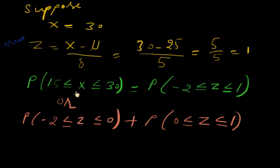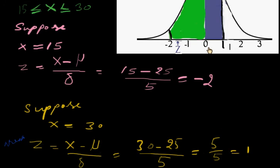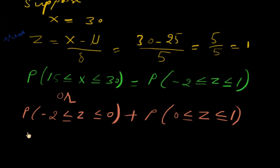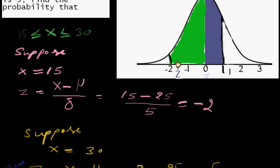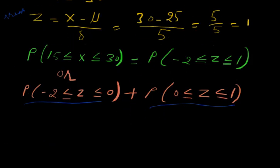Now probability of X between 15 and 30 will equal the probability of Z between negative 2 and 1. We can calculate the probability of these two areas. First we calculate this area, then we calculate this area, and when we add both areas we can calculate the probability of X between 15 and 30.